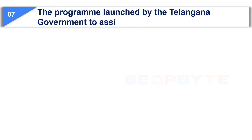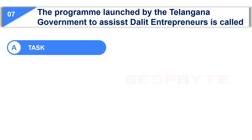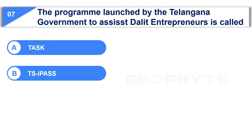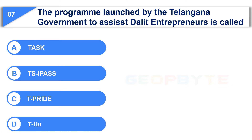The seventh question is: The program launched by the Telangana government to assist Dalit entrepreneurs is called — Option A: Task. Option B: TSI Pass. Option C: T-Pride. Option D: T-Pride.